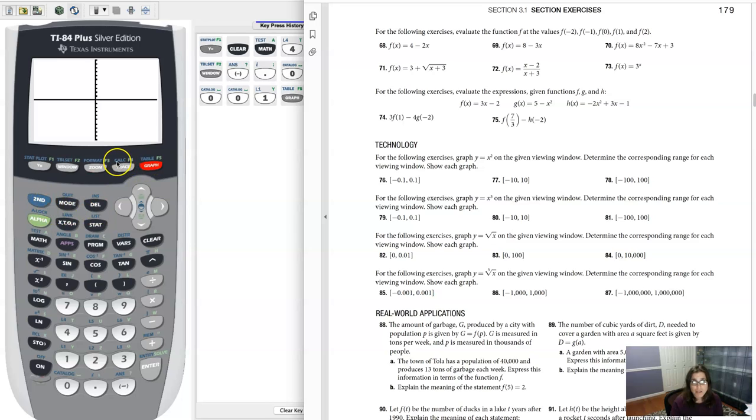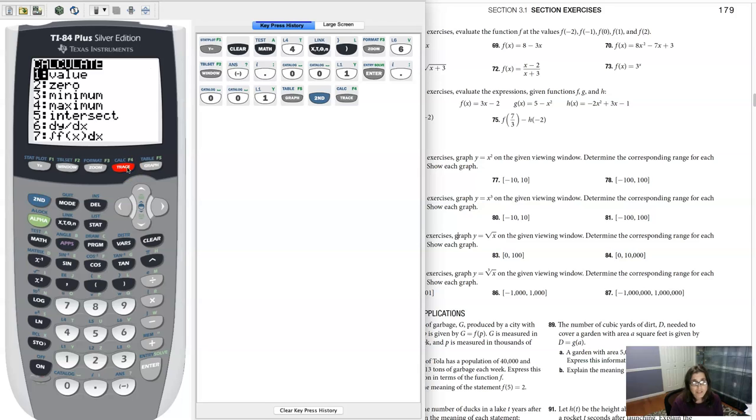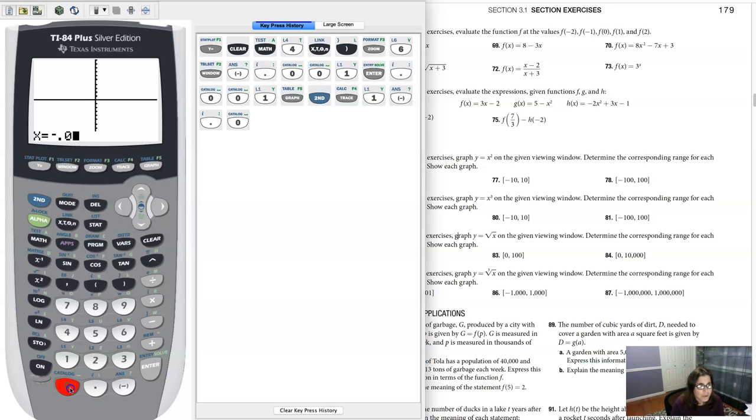To do that, I'm going to go into my calculation menu and I'm going to do second and trace to get there. Let me calculate this value. So option one. So let's plug in negative 0.001 and let's see what y value we get back out. It looks like we're getting negative 0.1.